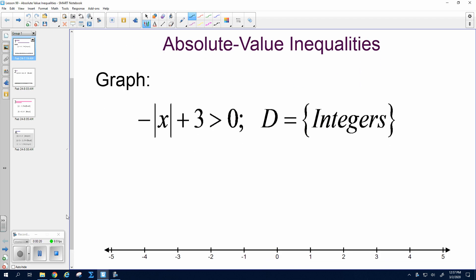Negative absolute value of x plus 3 is greater than 0, domain integers. And we're always going to isolate the absolute value right here. So first I'm going to subtract 3 from both sides. Negative absolute value of x is greater than negative 3.